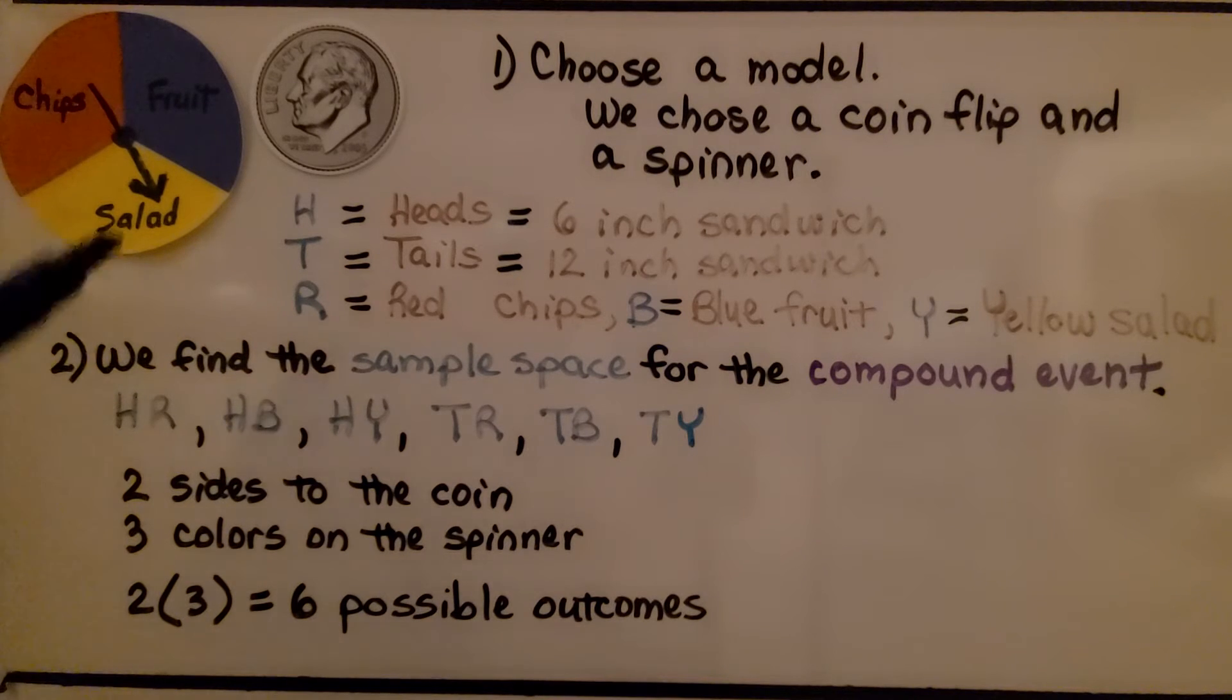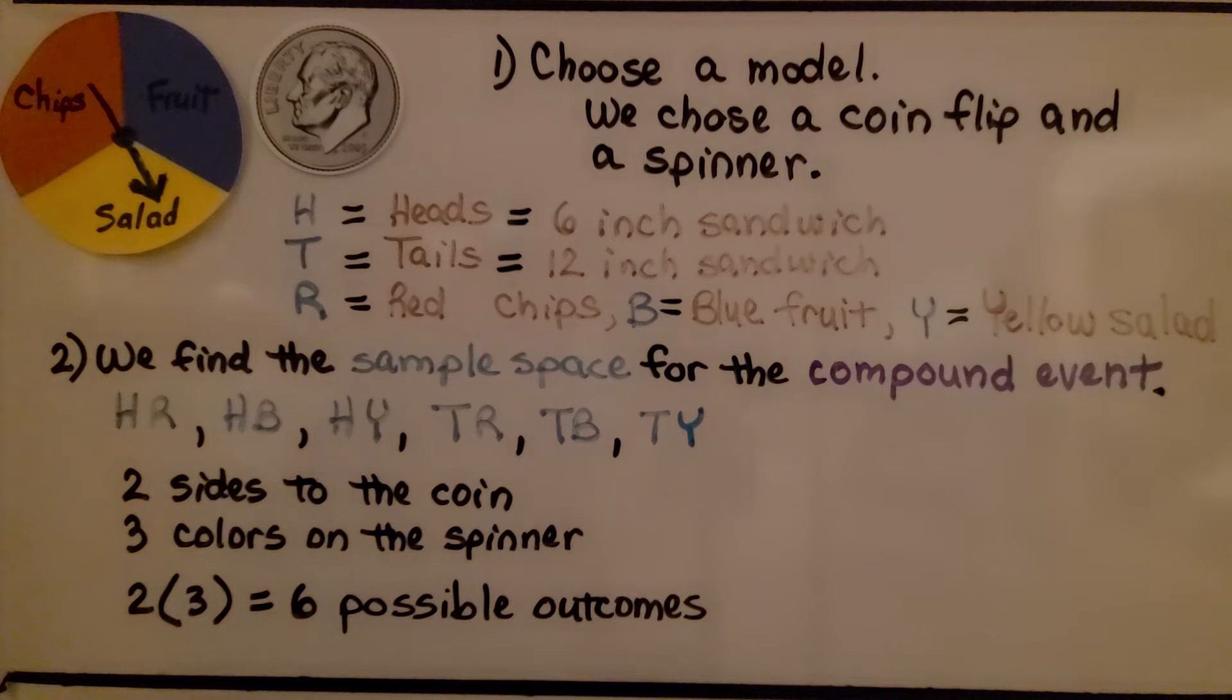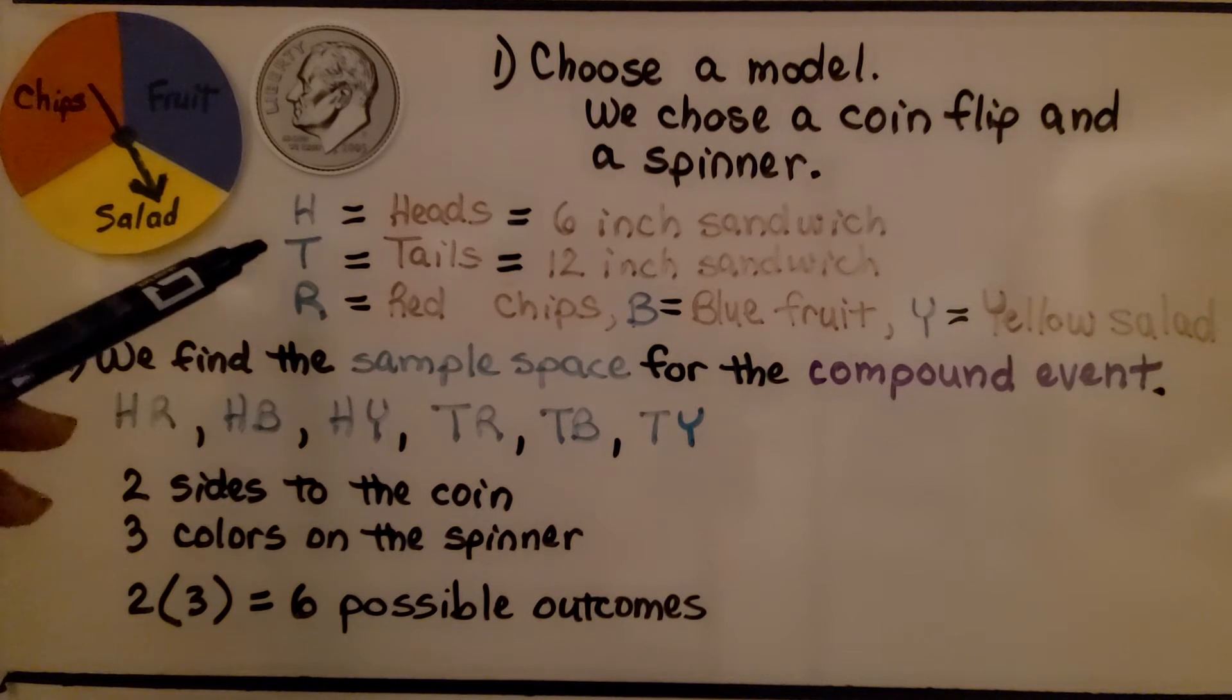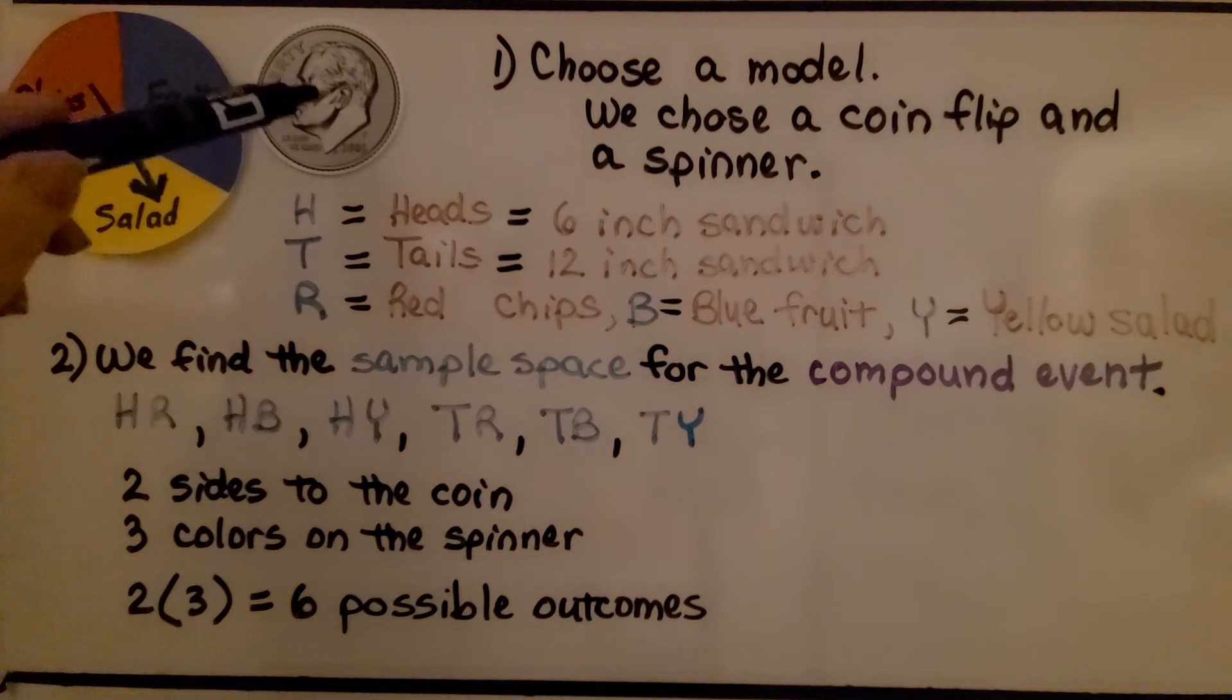We choose our model, which is the coin flip and the spinner. We can assign H for heads, which will be a 6-inch sandwich, and T for tails, which will be a 12-inch sandwich. The coin is going to help us choose whether it's going to be a 6-inch or 12-inch sandwich.